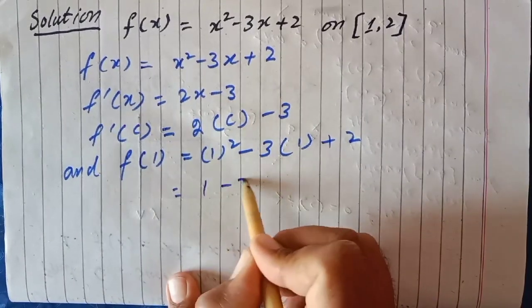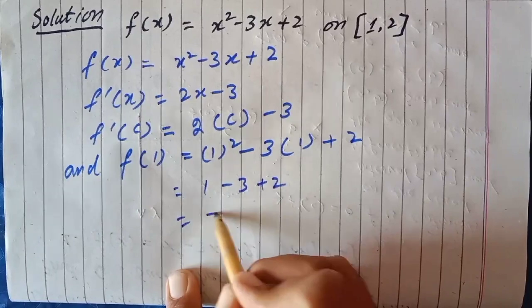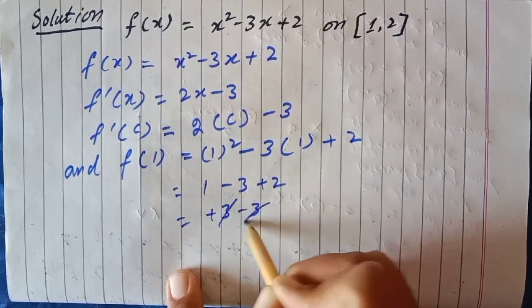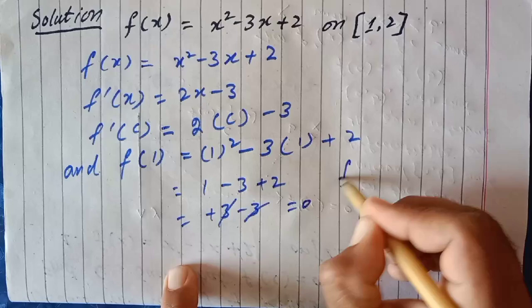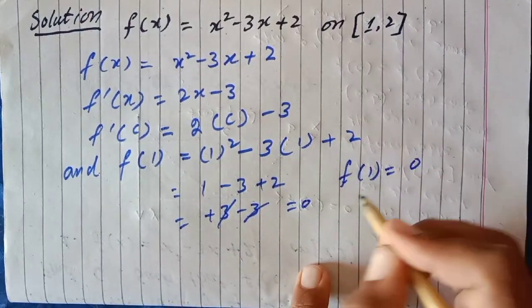This equals 1 - 3 + 2. The 3 - 3 cancels, which equals 0. So f(1) = 0.